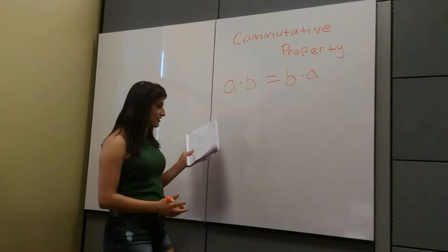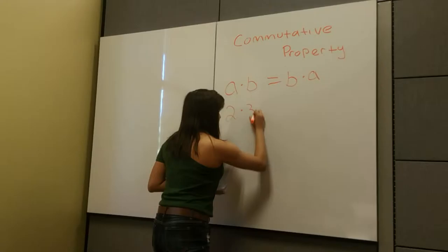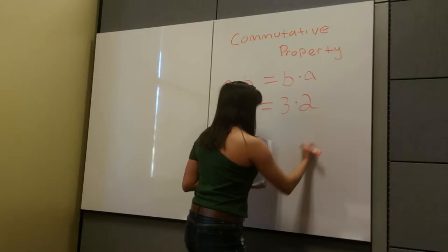In order to help a child understand this method a little bit better, we'll replace the letters with numbers. So we'll say 2 times 3 is equal to 3 times 2.